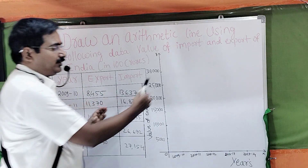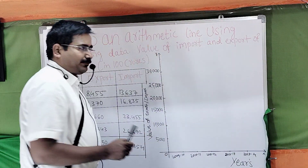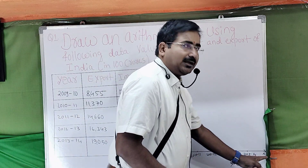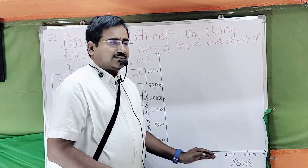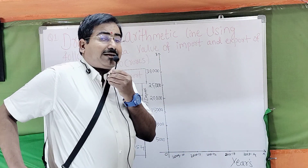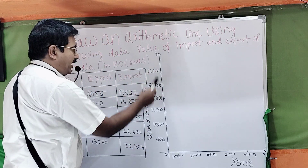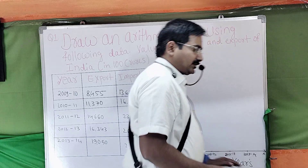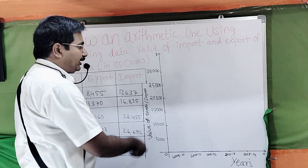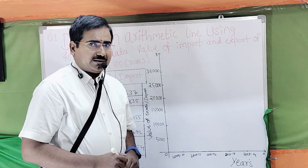Then we go for the diagrammatic. You know that OX — we have measured by the years, which we call the X variable or OX axis. Then OY is the vertical line. So horizontal and vertical. The vertical line will decline to the export value and then import. This is how we are framing the diagrammatic, dear students.